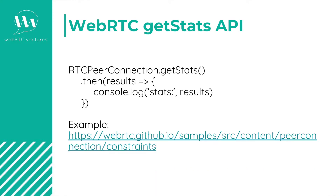Essentially, after you create an RTC peer connection, you can call its GetStats function, which will return a promise. When the promise resolves, you'll get an array with all kinds of information about the connection that will help you to diagnose any problem that may be happening in a call.